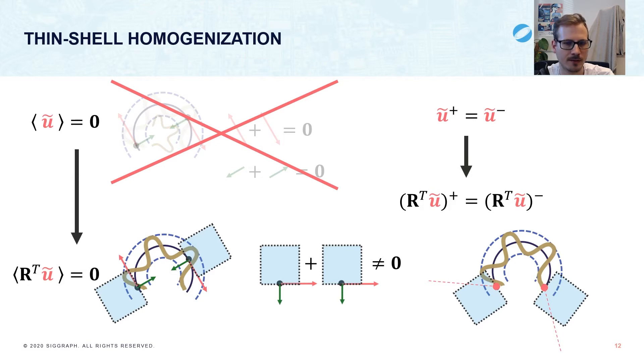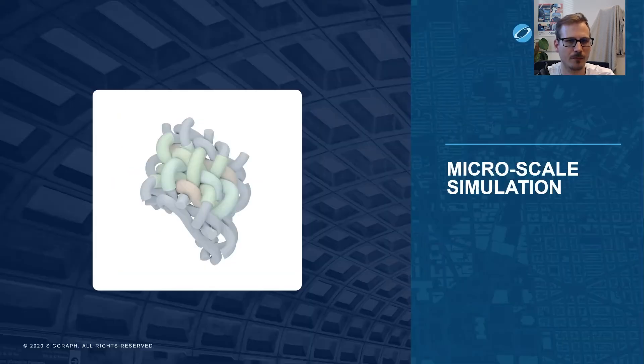Basically, what this constraint is doing is tiling the periodic yarn pattern along the curved surface. All that said, we now have a way of imposing macroscale deformations on our microscale yarn pattern, and we can turn our attention to the actual simulation.